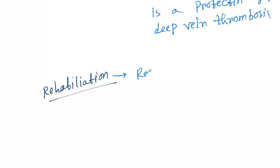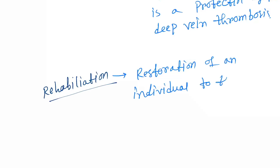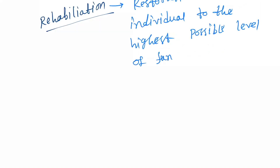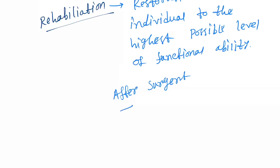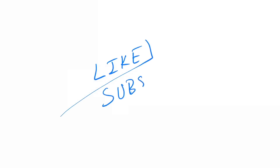And the other component is rehabilitation. Rehabilitation is the restoration of an individual to the highest possible level of functional ability. For example, after surgery, the patient started walking. That's it for the levels of prevention of diseases. If you like this video, please hit the like button and subscribe to my channel.